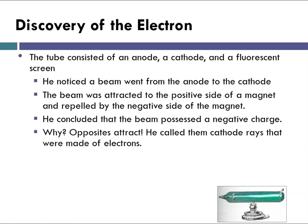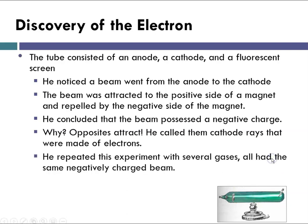Why? Because opposites attract and like charges are repelled — and the beam was repelled by the negative side of the magnet. He referred to what he was observing as a cathode ray and said they are made up of tiny particles called electrons that are negatively charged. He repeated this experiment with several elemental gases, and no matter which element he tried, they all resulted in the same negative charge.